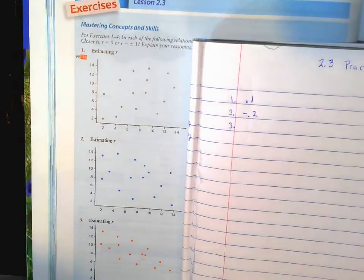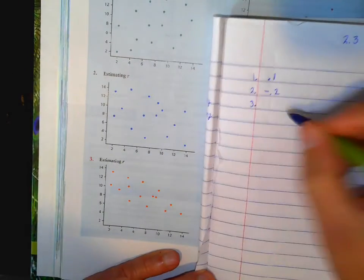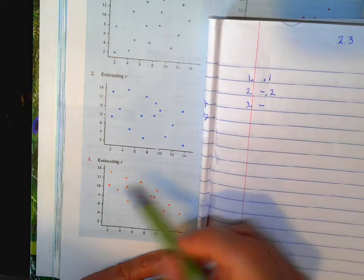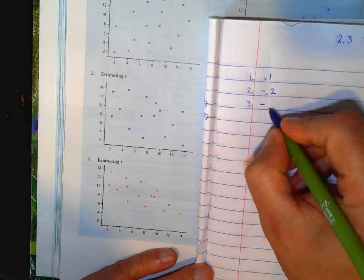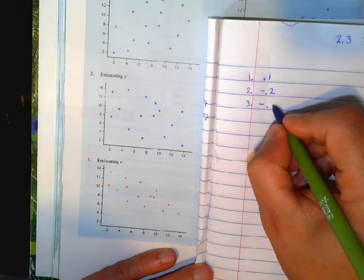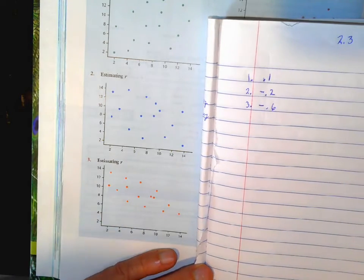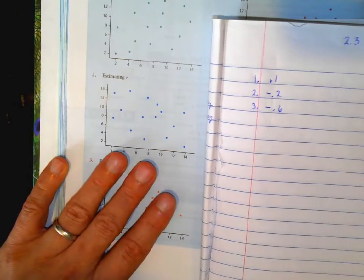Number 3, this one also has a negative slope, so I know it's going to be negative. And it's a little bit stronger, so I'd say maybe negative 0.6. You're just kind of estimating. You don't have to have those exact numbers.